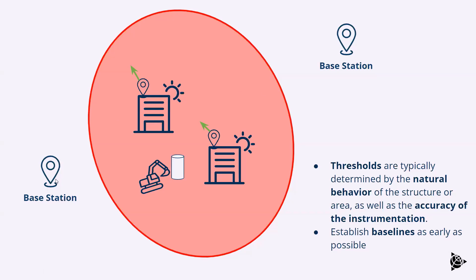We have our base stations set up outside of the zone of influence. The thresholds for the movement — what we're looking for and what we hope doesn't happen — are going to be determined by a few different things. One is the natural behavior of the structure. It's important to set up your instrumentation before that construction starts and understand how those buildings move without outside influence. That way, when construction starts, you can understand what movements are normal and abnormal. You also want to determine the thresholds before you start so you can determine the best instruments to use.